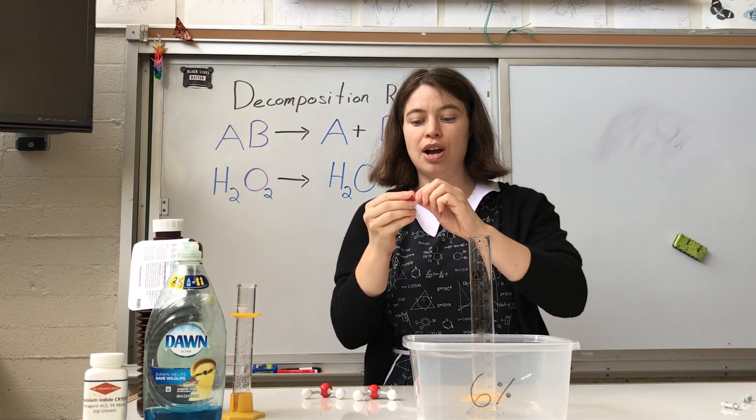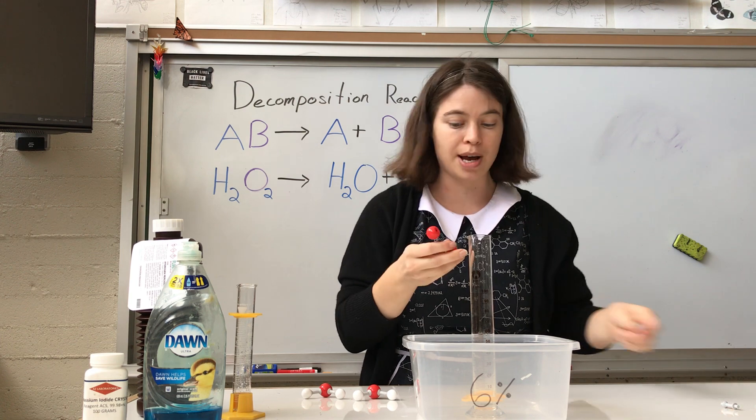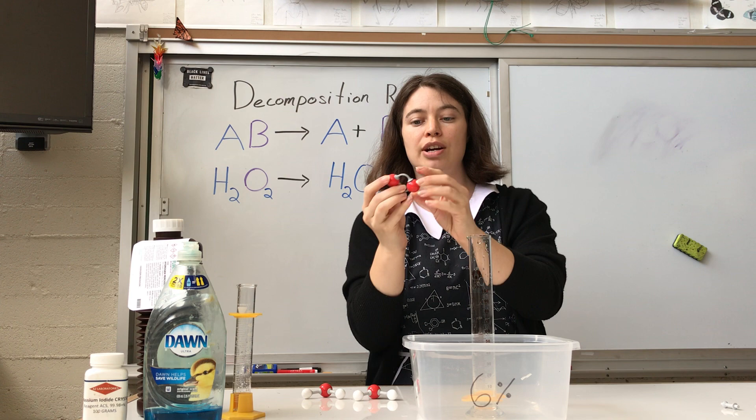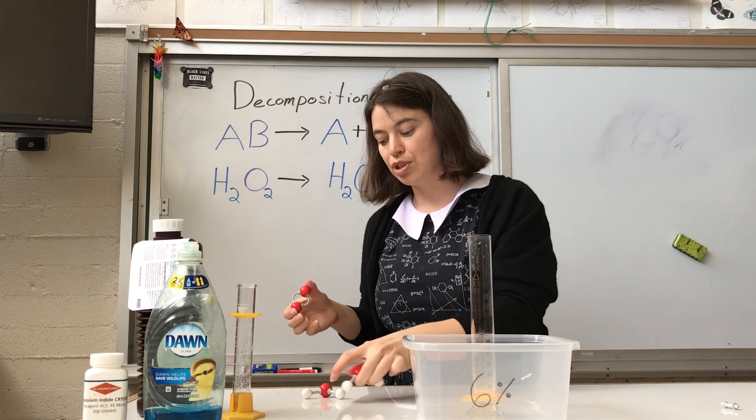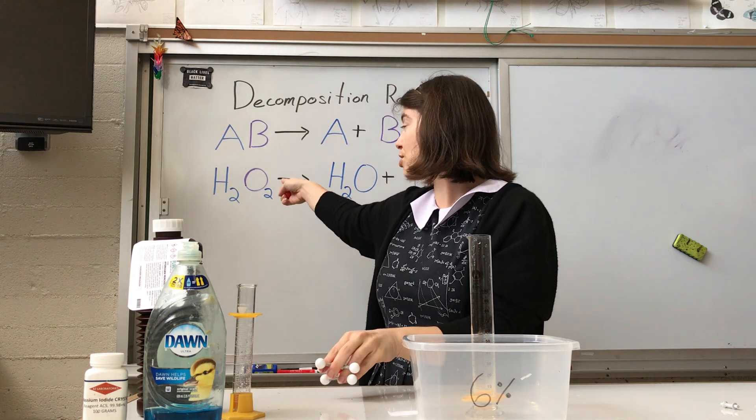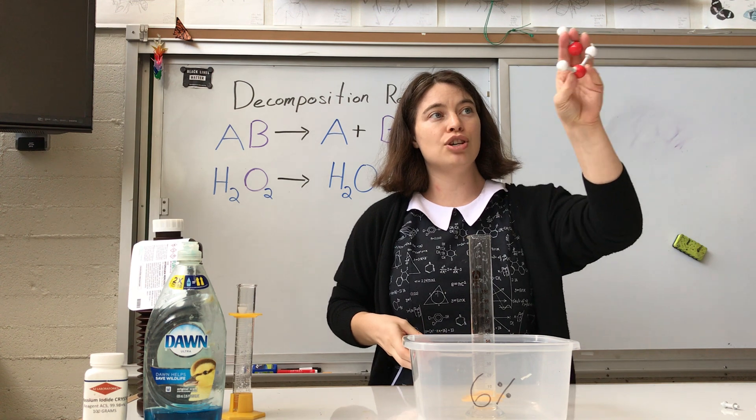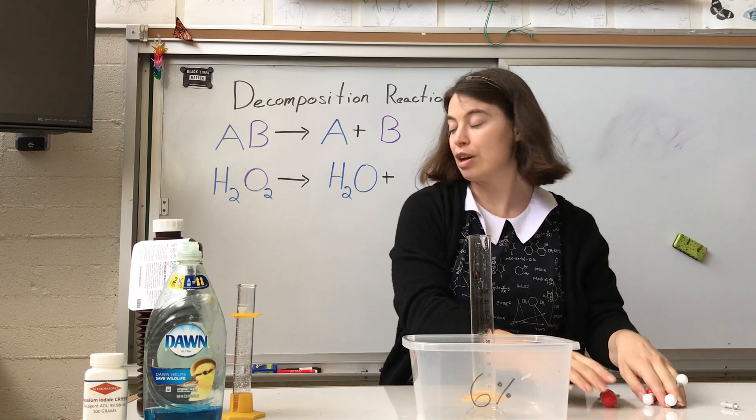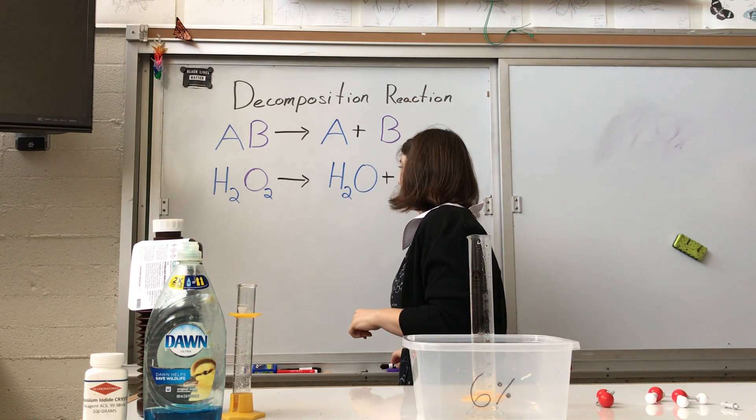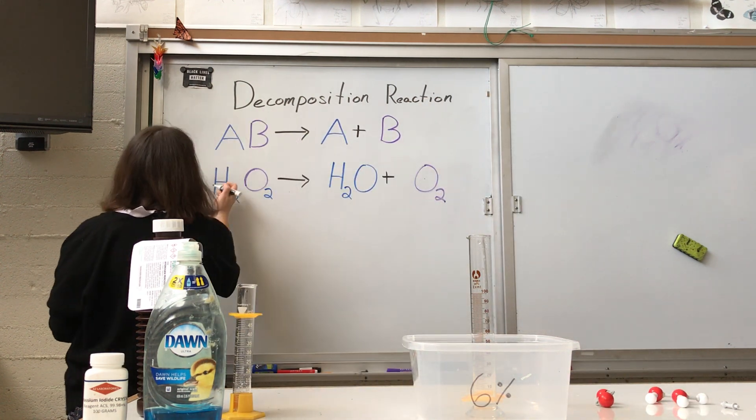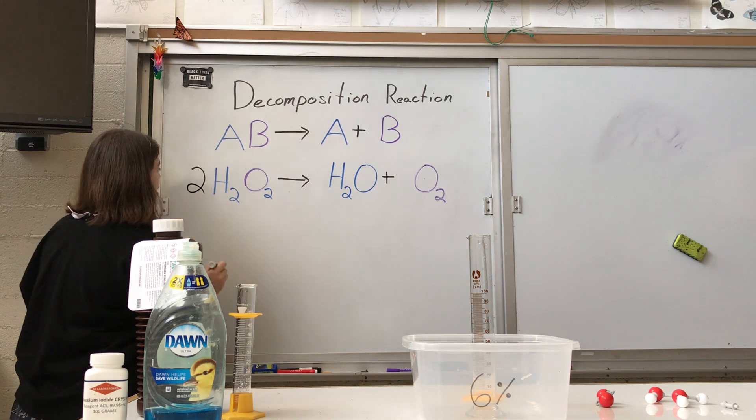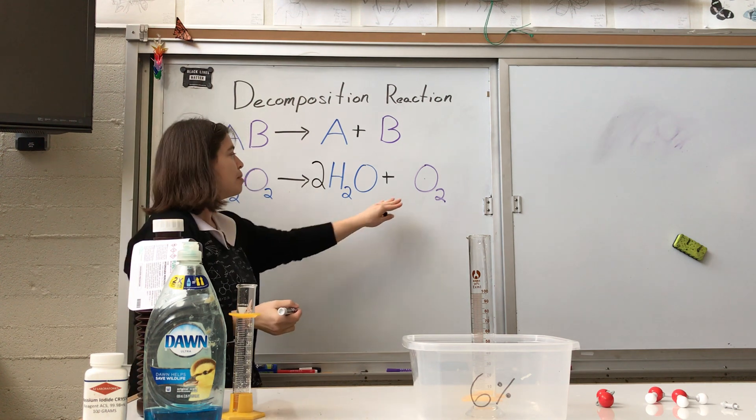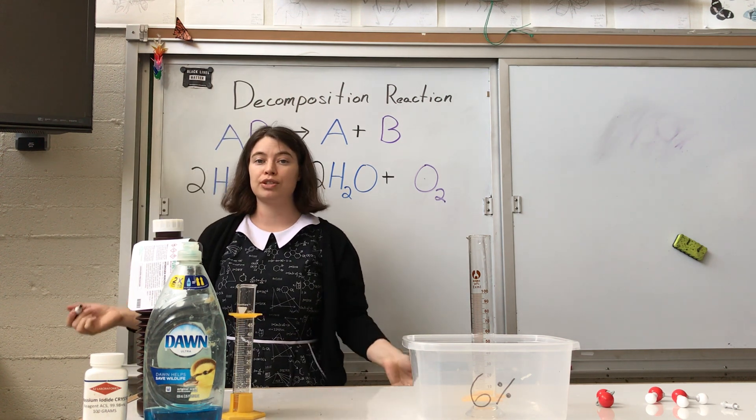So these sort of long flexible bonds represent a double bond. That's what happens when there are two pairs of electrons shared. So I started with two molecules of hydrogen peroxide, and I created two molecules of water and one molecule of oxygen gas. So if I look at my equation, I'm going to balance this. For every two molecules of hydrogen peroxide, I will produce two molecules of water, but only one molecule of oxygen gas.